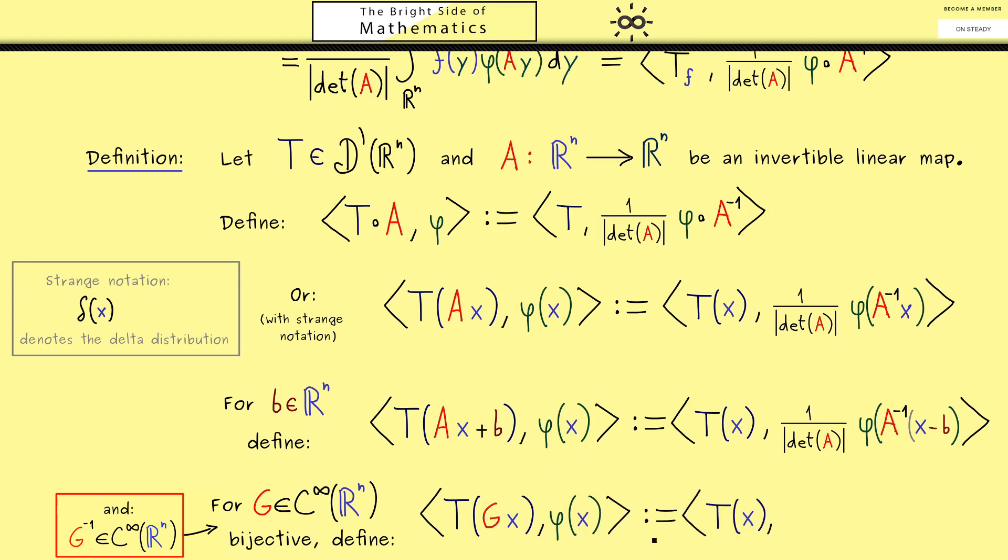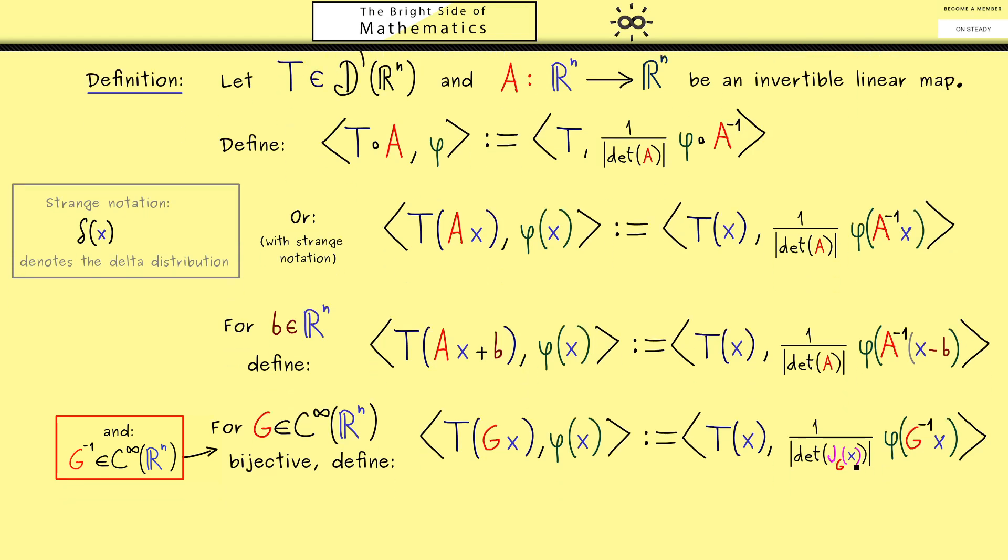Okay now in order to define this we can look at the integral again for a regular distribution. And there we see we need the Jacobian matrix here. Of course besides this it looks exactly the same as before now with g inverse. However here please note the Jacobian matrix can depend on x. Therefore also here this sloppy notation is helpful again.